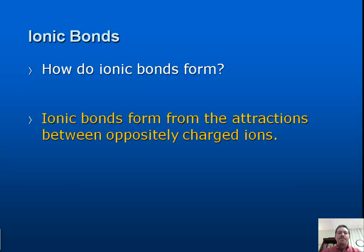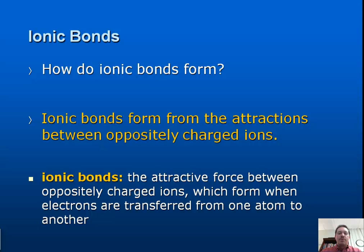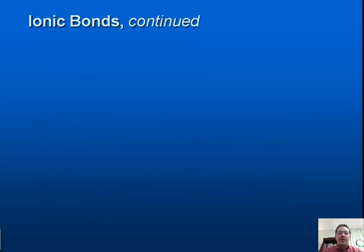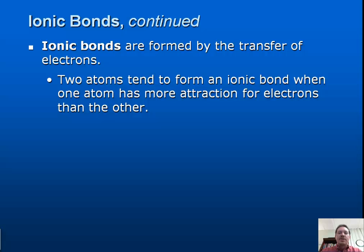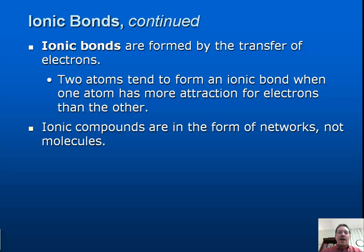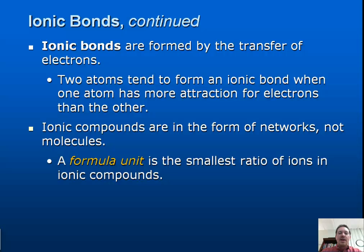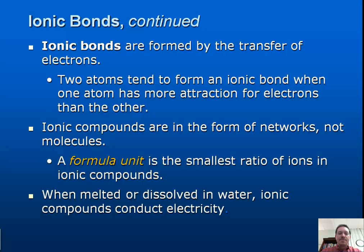So how do ionic bonds form? Ionic bonds form from the attraction between oppositely charged ions. An ionic bond is defined as the attractive force between oppositely charged ions, which form when electrons are transferred from one atom to another. Two atoms tend to form an ionic bond when one atom has more attraction for electrons than the other. Ionic compounds are in the form of networks, not molecules, taking on a very structured, very fixed appearance. A formula unit is the smallest ratio of ions in an ionic compound. When melted or dissolved in water, ionic compounds conduct electricity.